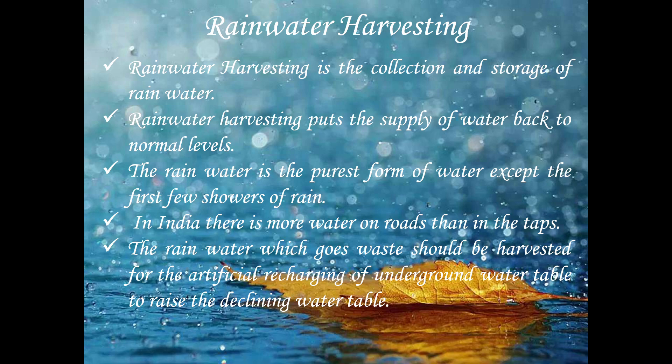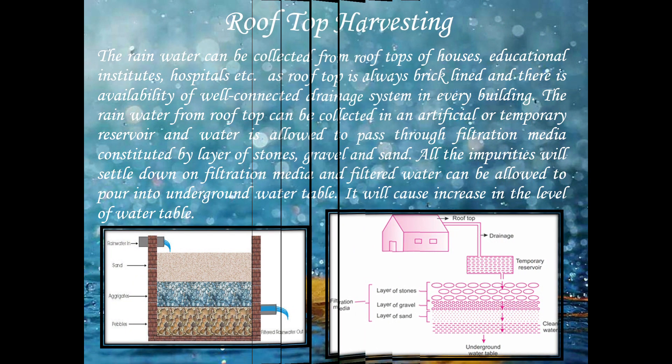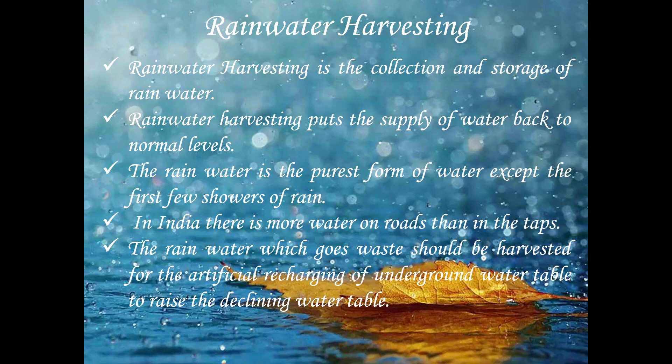Nowadays, due to various agricultural crops — especially paddy — the water table is declining day by day. This rainwater can be put back on track by artificial recharging of underground water, which can be easily done by rainwater harvesting. Unfortunately, in India, there is more water on the roads than in the taps. The rainwater that goes to waste should be harvested for artificial recharging of the underground water table so that we can raise the declining water table.